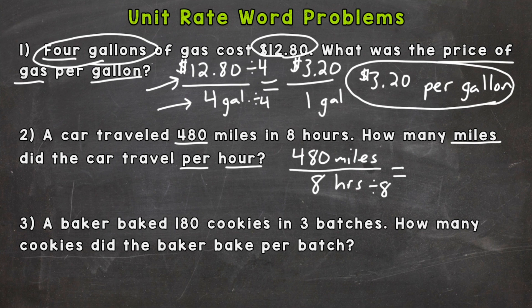Whatever we do to the bottom, we need to do to the top in order to keep it equivalent. And eight divided by eight, we get per one hour here. And 480 divided by eight will be 60 miles. So the car traveled 60 miles per every one hour. So 60 miles per hour.